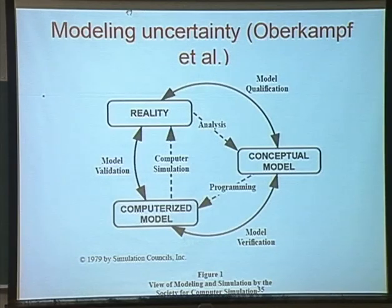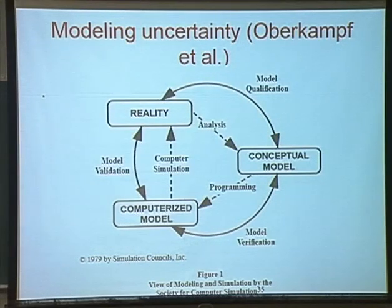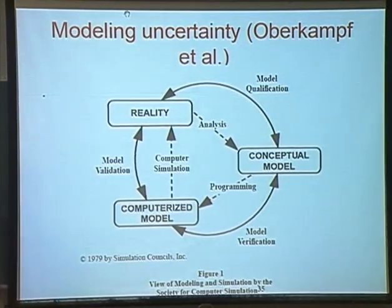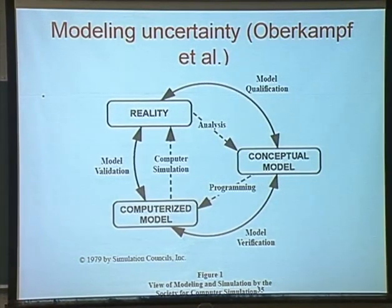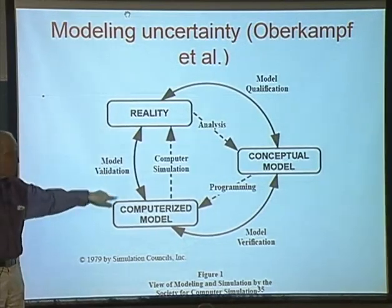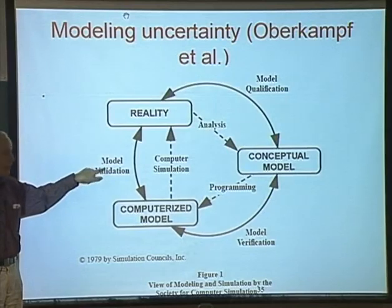The terms verification and validation used to have a fairly vague meaning — people sort of interchanged them — but now they have gelled into very definite terms. You want to make sure that the results coming from the model are reasonably accurate. The comparison with the experiment is model validation — you compare the prediction of your computer program to reality. Here, reality doesn't intrude; you are working between the conceptual model and the computerized model.